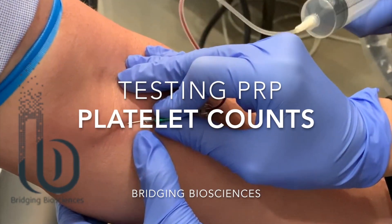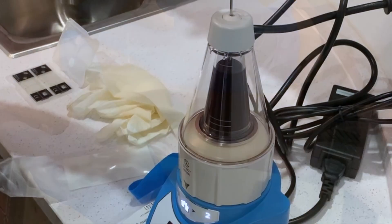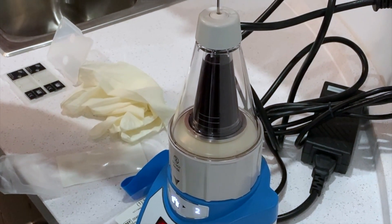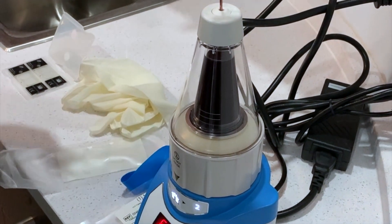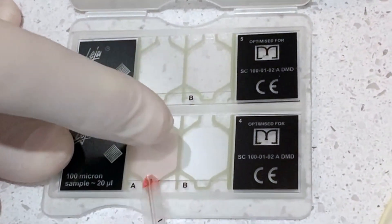Bridging Technologies has a new way to identify the platelets in PRP and count them. It is as accurate as flow cytometry. What we are doing today is testing the platelet count in our Genius system.